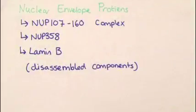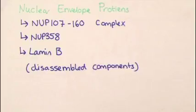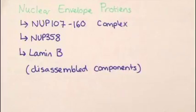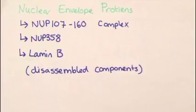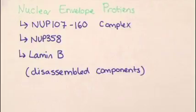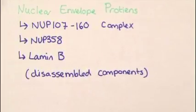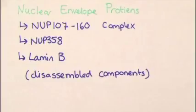Nuclear envelope disassembled components also have a role in the cell cycle. For example, NUP107-160 complex protein is crucial for pore assembly and function. NUP358 has a role in RAN-GAP cascade, which is associated with centrosomes.